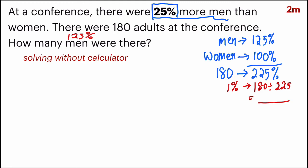So what do you do? Well, I would encourage you to change this 25% into a fraction. So to simplify, you will get a quarter. So reading it this way, there were one quarter more men than women.